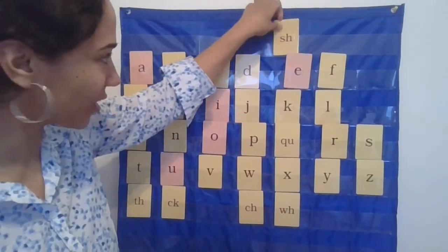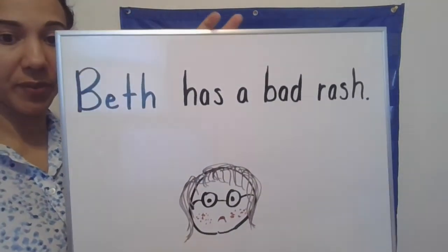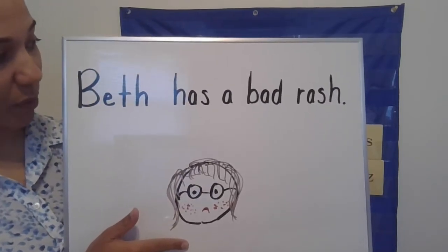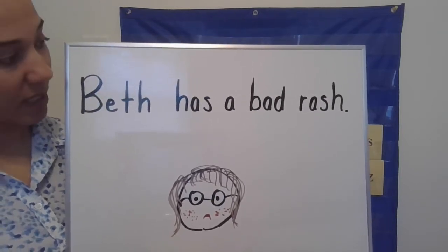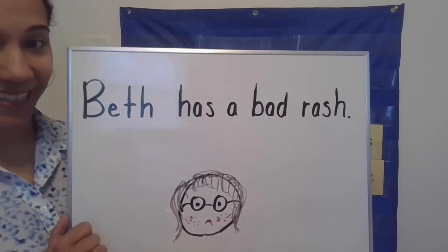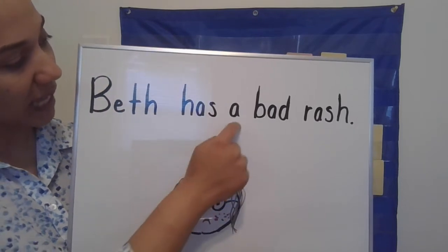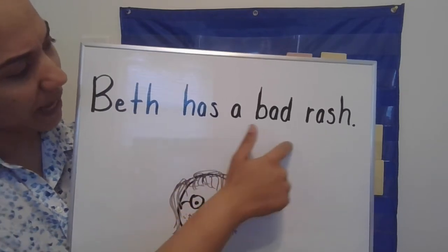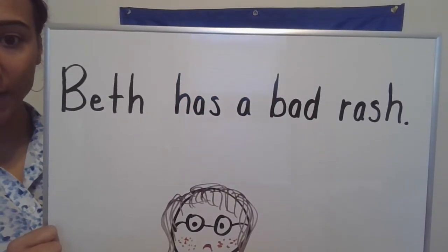Rash, rash. If you got the word rash, excellent! Tapping. Now let's take these words and turn them into a sentence with some trick words. Here's my friend I told you about — Beth. Can you find the trick words? If you found 'has' and 'a,' you are correct. So let's read the sentence together: Beth has a bad rash.